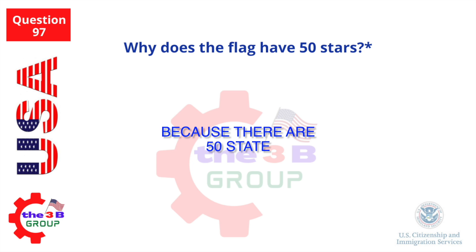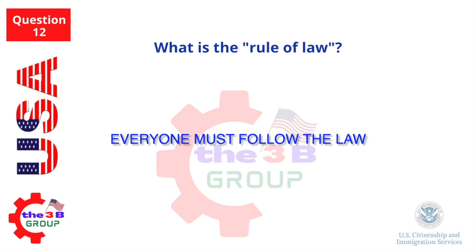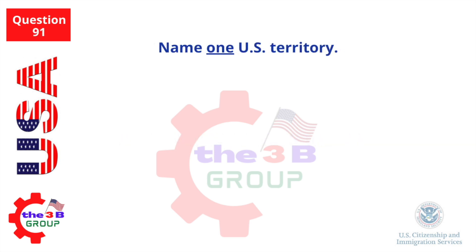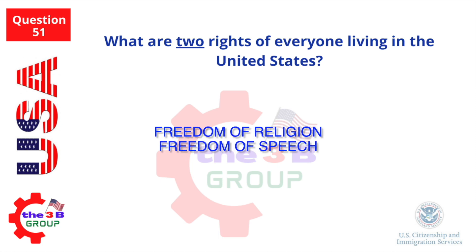Why does the flag have 50 stars? Because there are 50 states. What is the rule of law? Everyone must follow the law. Name one U.S. territory. Guam. What are two rights of everyone living in the United States? Freedom of religion and freedom of speech.